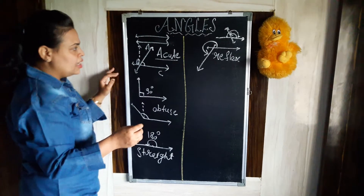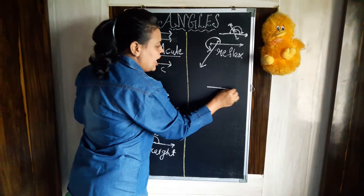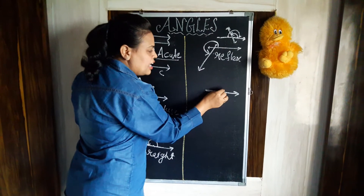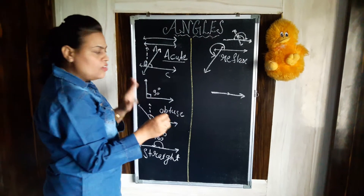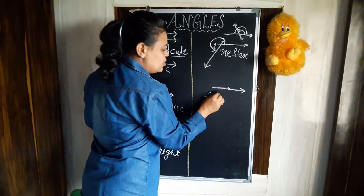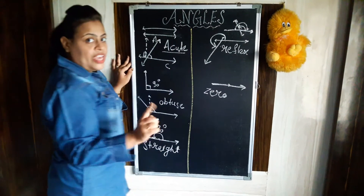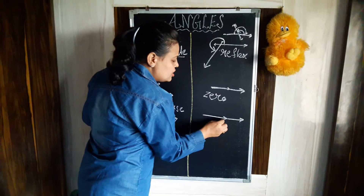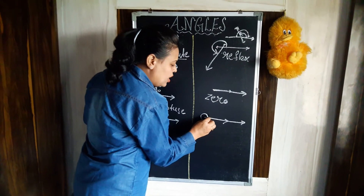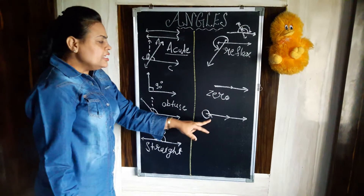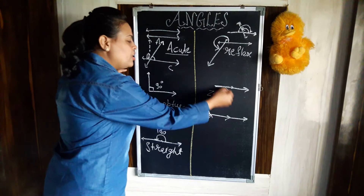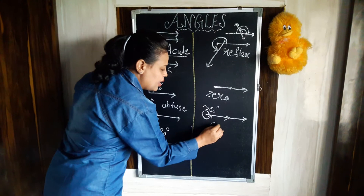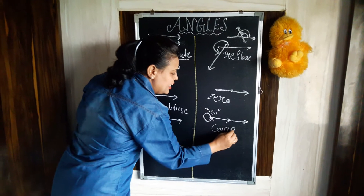Now we come to the next type of angle. We have a zero angle — when two lines overlap each other, they form no angle; we call it a zero angle. We have one more type — a complete angle. The difference between zero angle and complete angle is that in a complete angle, one line rotates 360 degrees before overlapping the other. So that becomes our complete angle.